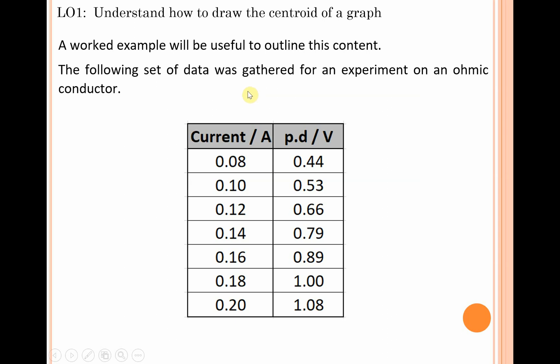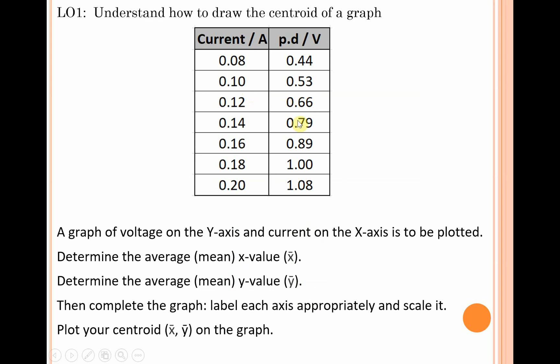A worked example will prove to be quite effective to see exactly how you plot this centroid for a particular graph. This table of results is a table I've taken myself for an ohmic conductor in the school I currently work in a few years ago. I recommend you undertake this worked example yourself fully on a piece of graph paper. A graph of voltage on the y-axis and current on the x-axis is to be plotted. First, determine x̄, then ȳ, and then complete the graph to plot your centroid.